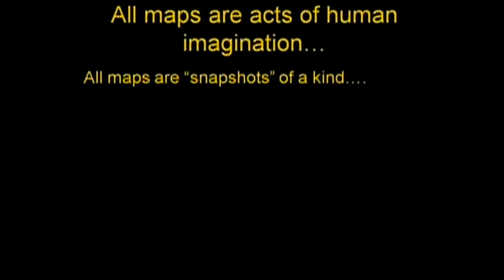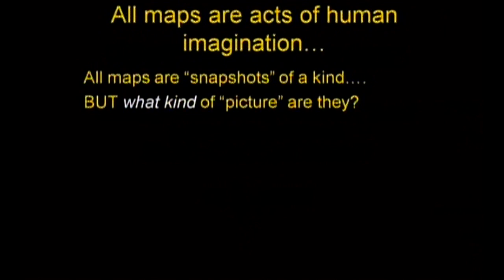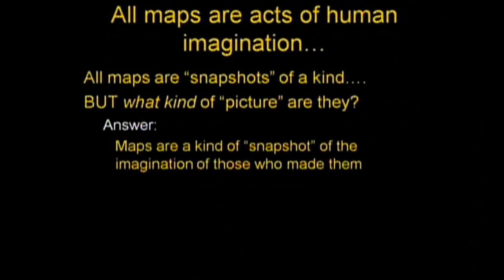All maps are, in fact, acts of human imagination. They don't exist as photographs. Long before photographs, they predated the idea of imagining something, and all maps are snapshots of a kind — but snapshots of what? That's the question we have to start asking and answering. What kind of picture are they if they're a snapshot? The answer is complicated but not difficult. There are several layers to it, but it's not mysterious. Maps are a kind of snapshot of the imagination of those who made them.